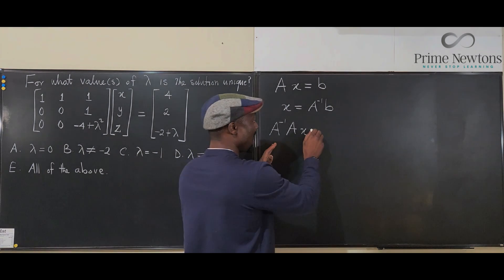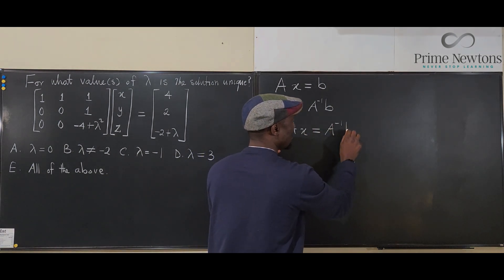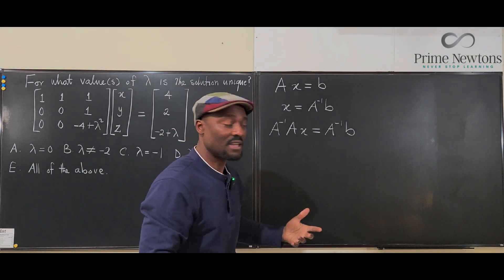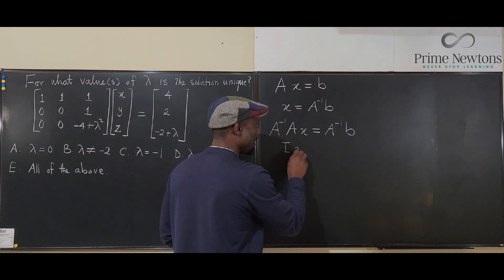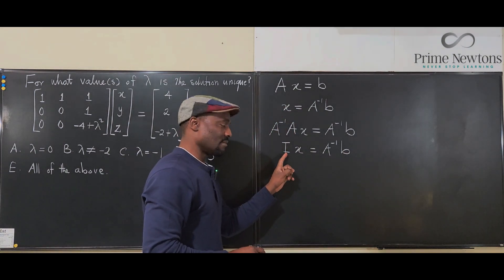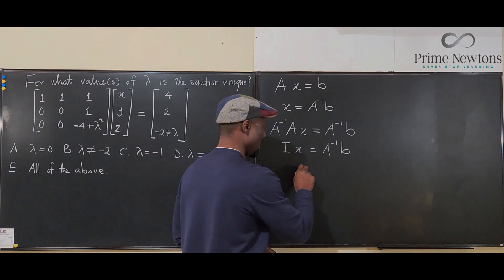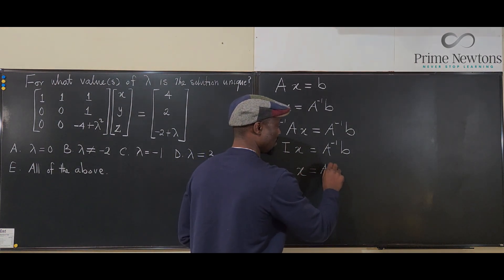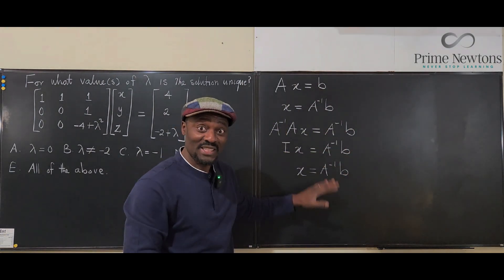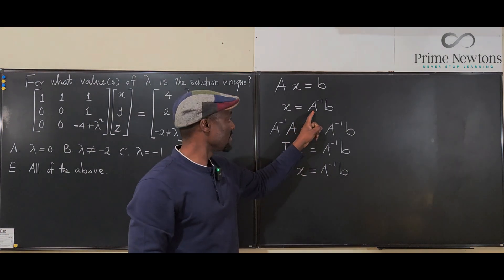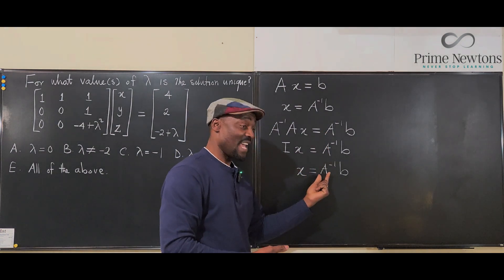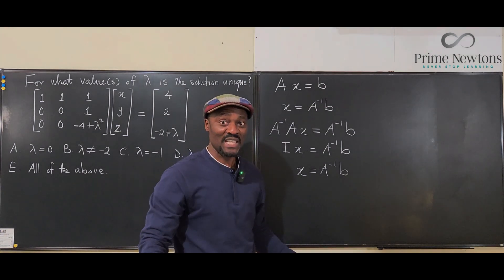You multiply the inverse of A by A from the left, and that equals what we have on the right. The inverse of a matrix times the matrix is the identity element, so this gives IX, which is just X. The identity matrix times the solution vector is just the solution vector itself — A-inverse times B. So if you cannot find the inverse of A, you cannot find any unique solution.